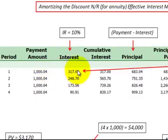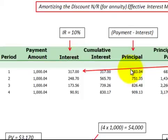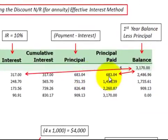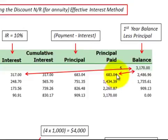That payment includes both the interest receivable or payable plus a principal portion. If we subtract the interest from the payment amount of $1,000, we end up with a principal amount for the year of $683. We reduce the beginning balance of year one by that principal amount, and we end up with an ending balance of $2,486.